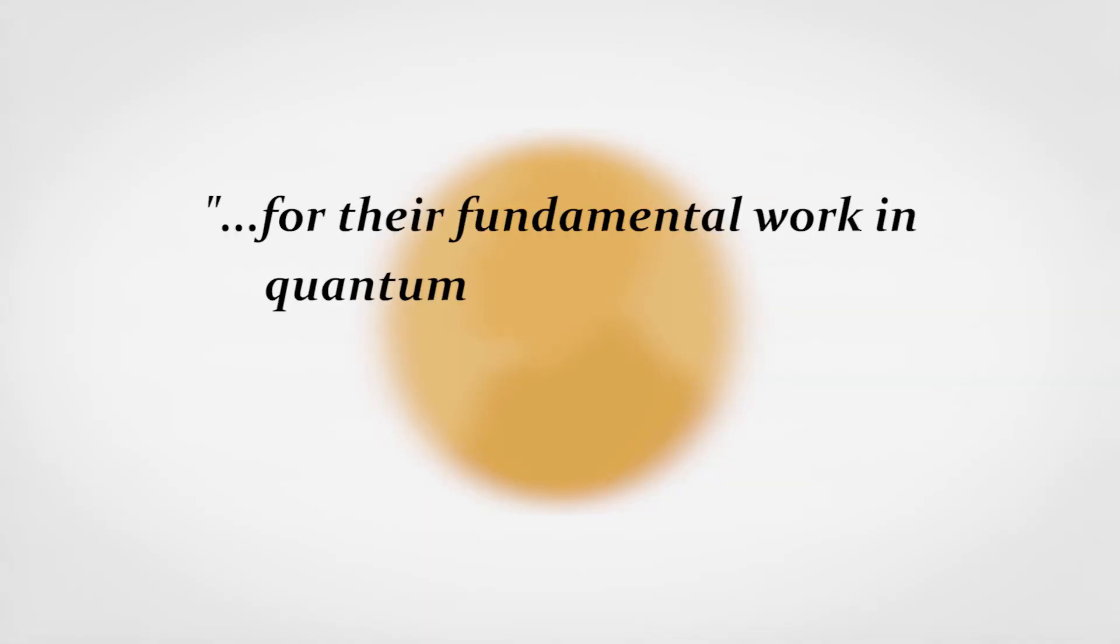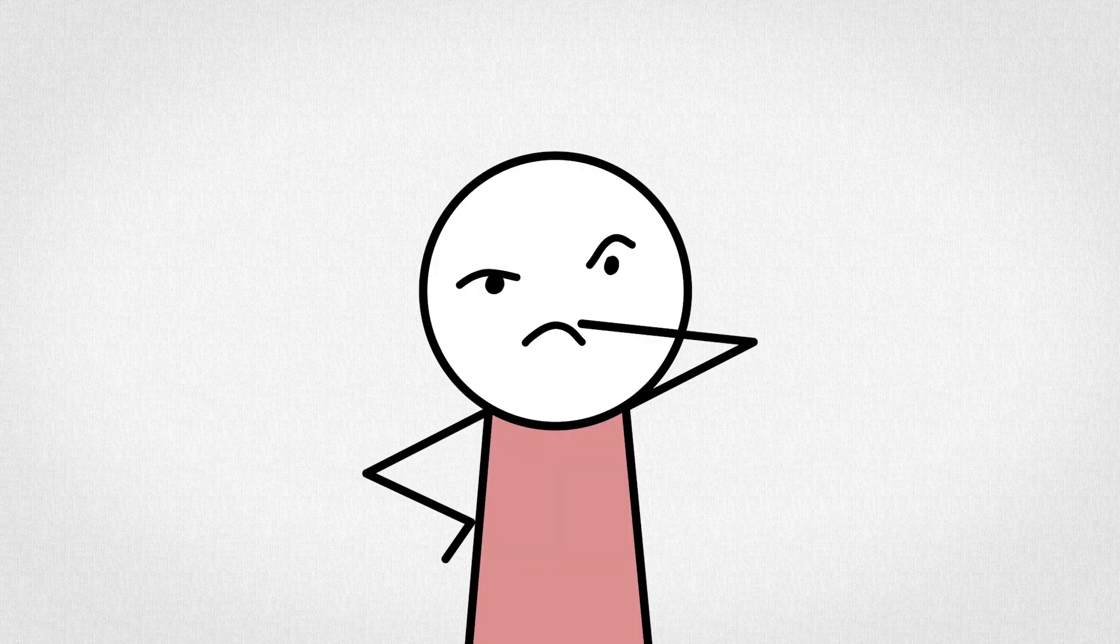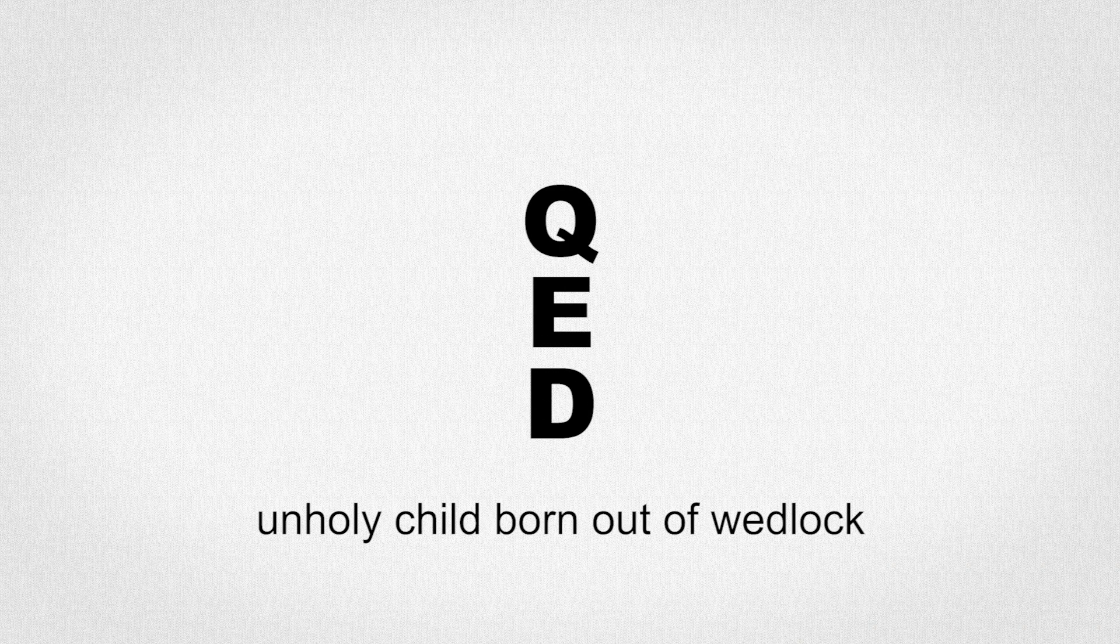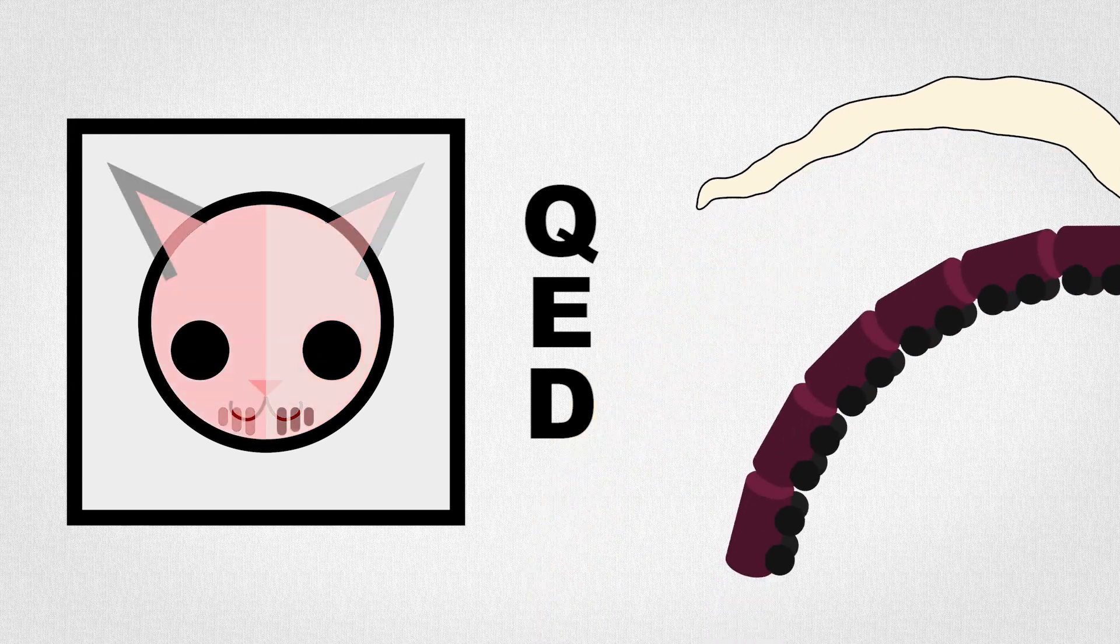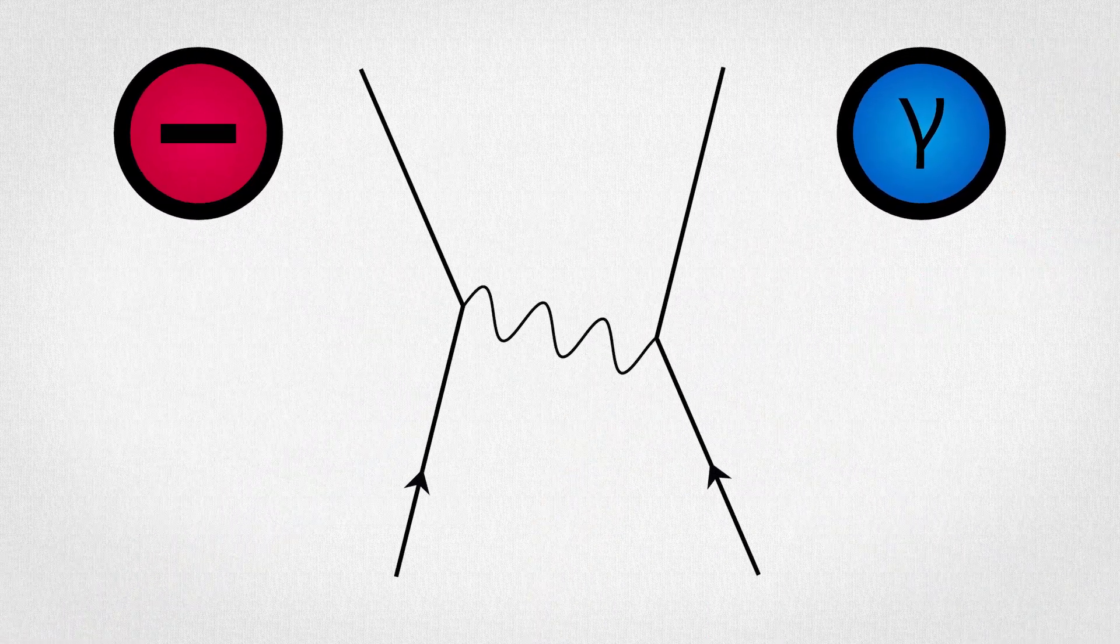Now according to the Nobel Committee, Feynman and his colleagues won the award for their fundamental work in quantum electrodynamics with deep plowing consequences for the physics of elementary particles. For the uninitiated, quantum electrodynamics is the unholy child born out of wedlock between quantum mechanics and relativity, specifically for electrons and photons, and this was Feynman's contribution.